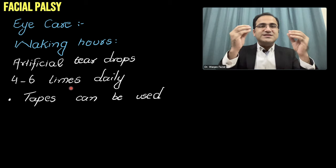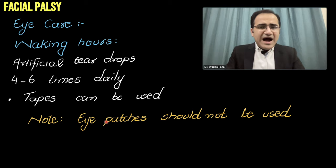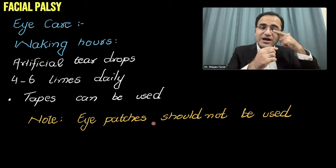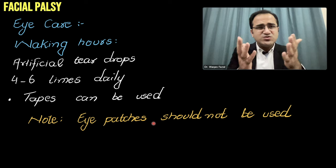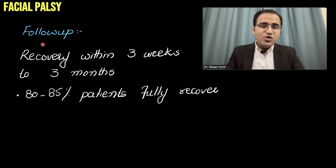Eye care is most important. These patients cannot close the eyes, and their eyes are dry because the lacrimal glands are supplied by the facial nerve. During waking hours, advise them to use artificial tears 4 to 6 times daily. They can also tape the eye to keep it closed. Eye patches alone are not recommended — they do not actually close the eye; if using an eye patch, tape the eye closed first and then place the patch over it. During sleep hours, they can use a medical-grade waterproof transparent tape or a dressing.